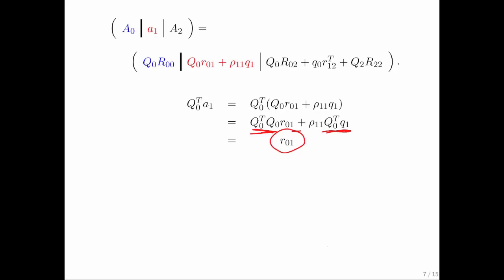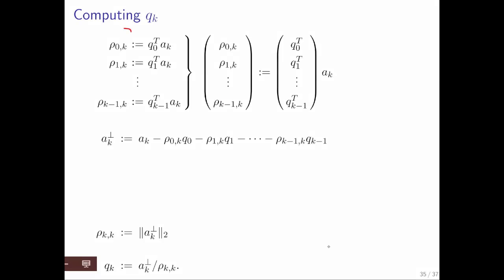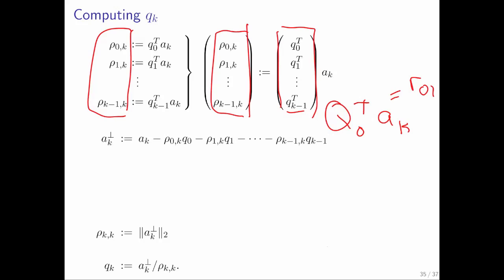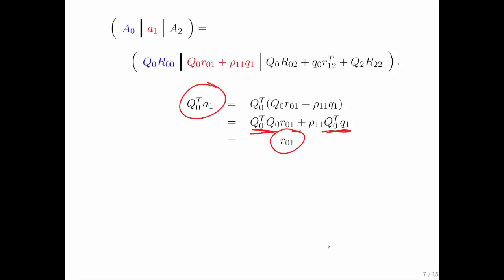And what you end up with is a vector R01 that you can compute by multiplying A1 by Q0 transpose. We've seen this somewhere before. We saw that all of these coefficients that we encounter in the Gram-Schmidt process could all be computed as one vector, which was this matrix right here, which we could call Q0 transpose, multiplying AK. And I think I even at that point said we could call that vector R01. So that's exactly what justifies how we just computed R01. So notice that we know Q0, we know A1, so we can now compute this vector R01, which is part of the next column of R.